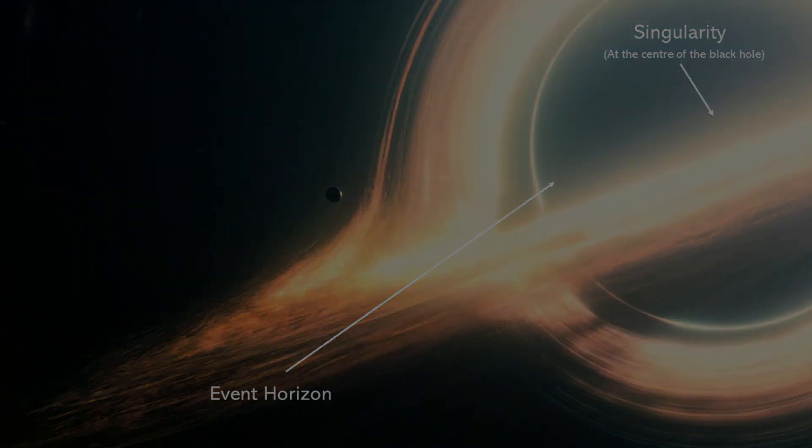Once an object or particle crosses this boundary and enters the region inside the event horizon, it is inevitably drawn toward the black hole's singularity at the center. There is no known force or speed that can allow an object to escape once it has crossed this boundary.